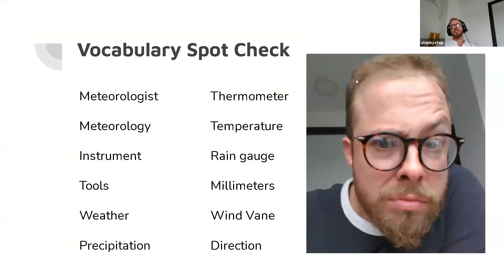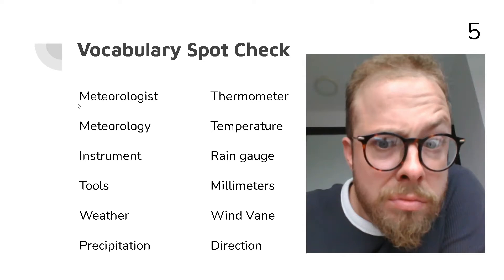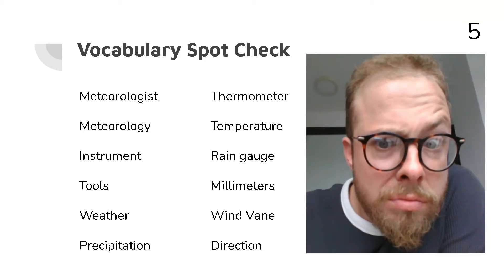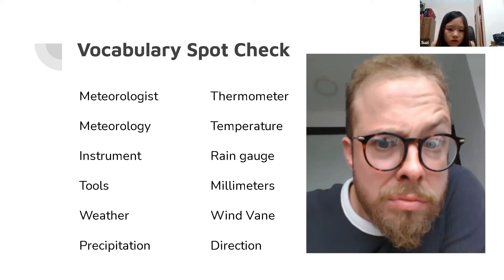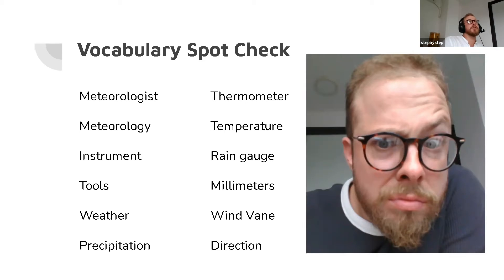Now we're going to do a spot check. I'm going to ask students at random questions. I want to know the answers. One of two questions — I'll either describe a word and you have to tell me what that word is, or I will say the word and you have to describe it to me. For example, Susie, what does a thermometer measure? The thermometer measures the temperature. Perfect. Well done.